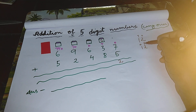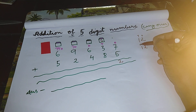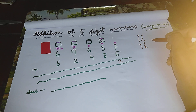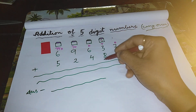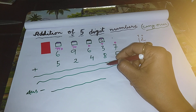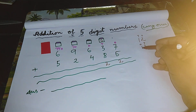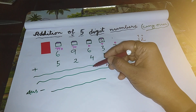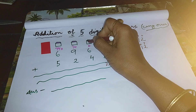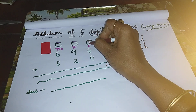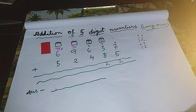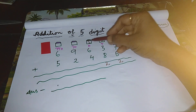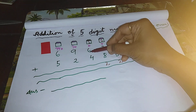Two belongs to ten's place. One belongs to hundred's place. So two will sit in the ten's column. We will make a separate room for this one. Now add all these digits.